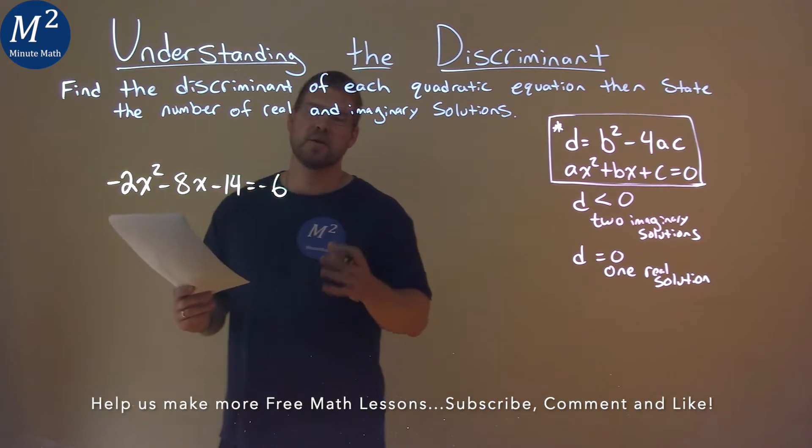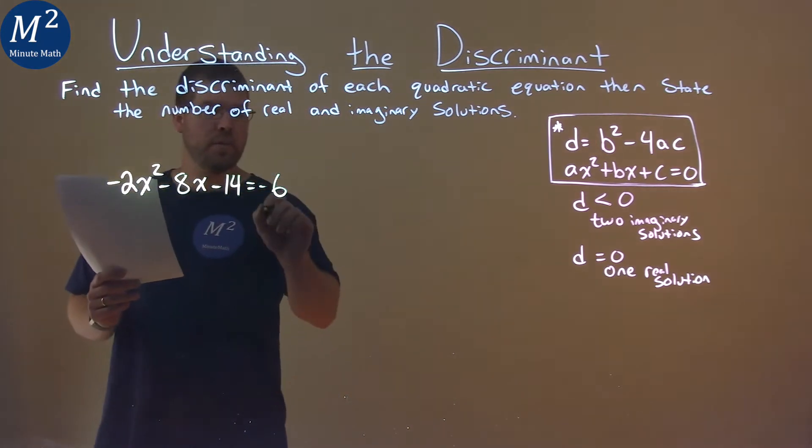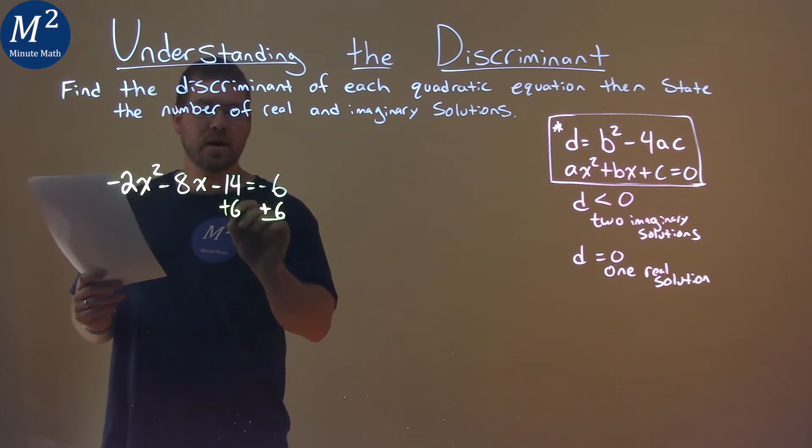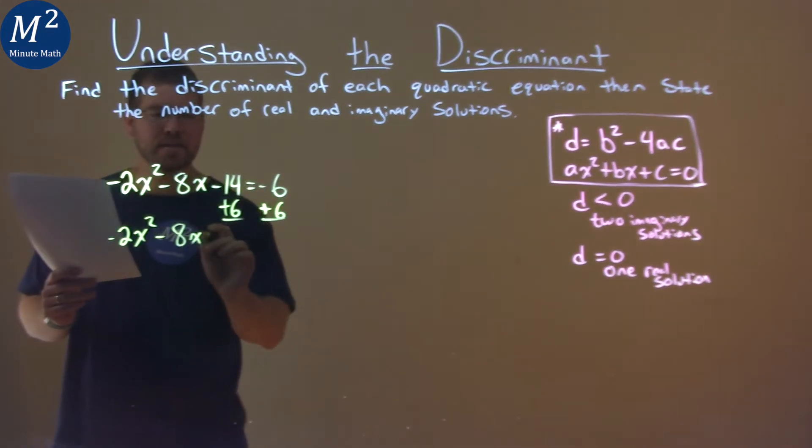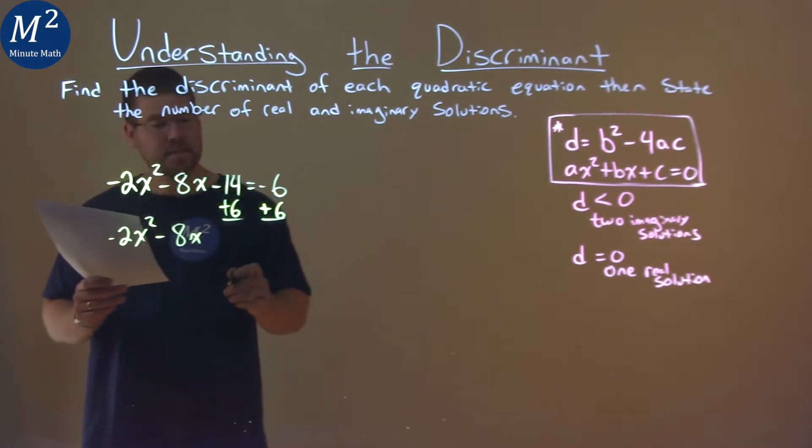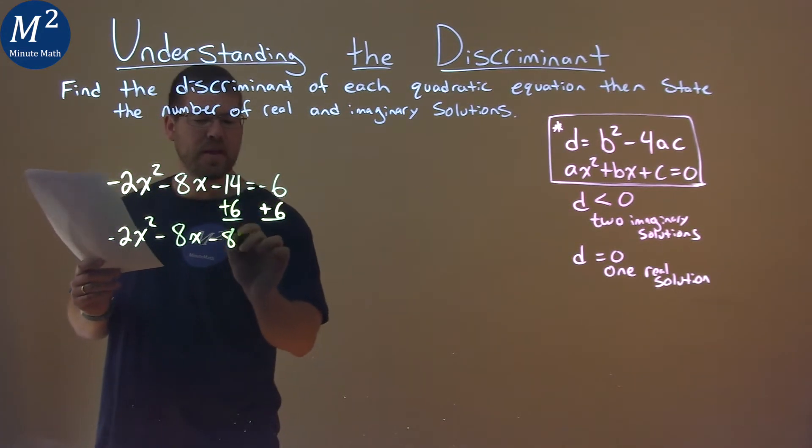The main thing here is I want to get my equation equal to 0. So I'm going to add 6 to both sides here and I have negative 2x squared minus 8x and negative 14 plus 6 is negative 8 and that's equal to 0.